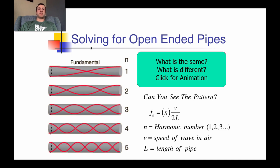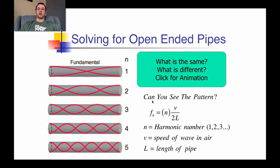The rationale behind why the math works out the same is because the end behavior for a string instrument versus an open-ended pipe is antinode-antinode. Because we have the same end behaviors, our wave pattern is just slightly shifted — we get a phase shift. Instead of a traditional crest or trough in the fundamental, we get a half crest and half trough — a quarter wave each to get to that half wave. F_n represents our frequency, n being the harmonic number. The formula uses speed of wave in air instead of speed on the string, and length of the pipe instead of length of the string.